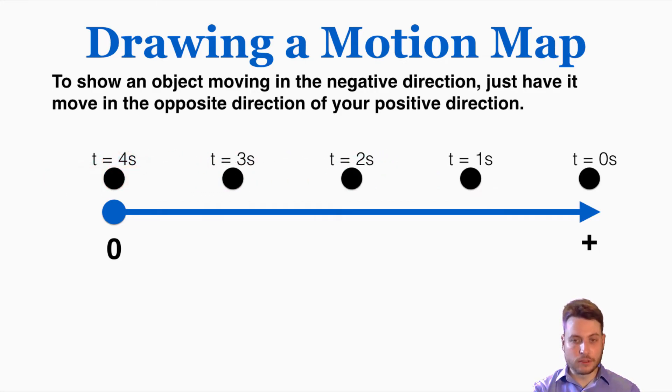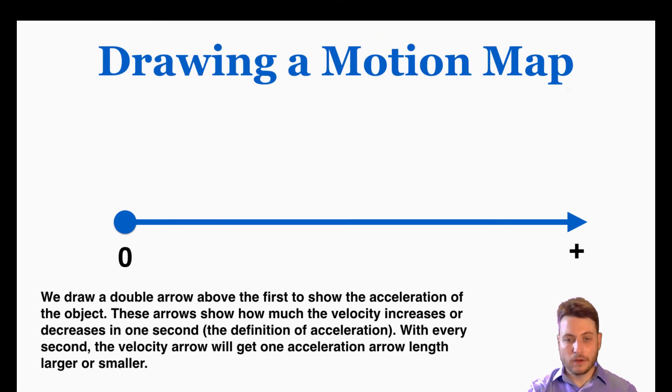And you could also draw arrows pointing to the left to connect those dots. We draw a double arrow above the first arrow to show the acceleration of the object. These arrows show how much the velocity increases or decreases in one second, the definition of acceleration. With every second, the velocity arrow will get one acceleration arrow length larger or smaller.